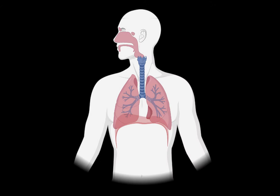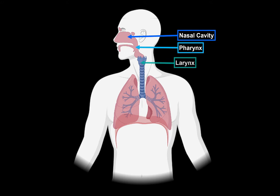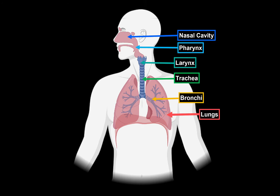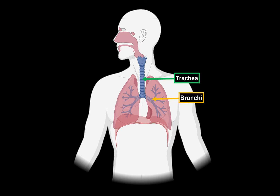The respiratory system consists of all the organs involved in breathing. These are the Nasal Cavity, the Pharynx, the Larynx, Trachea, Bronchi, and the Lungs. In our last two videos, we covered the anatomy of the Nasal Cavity and the Larynx. Now let's do the anatomy of the Trachea and the Bronchi.